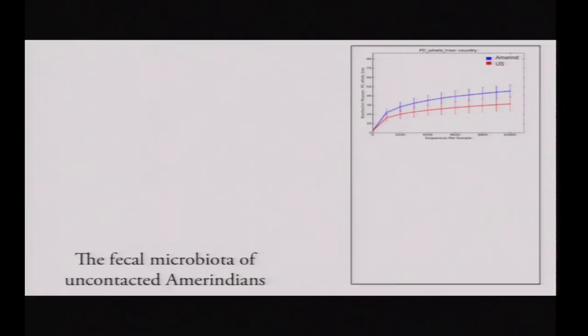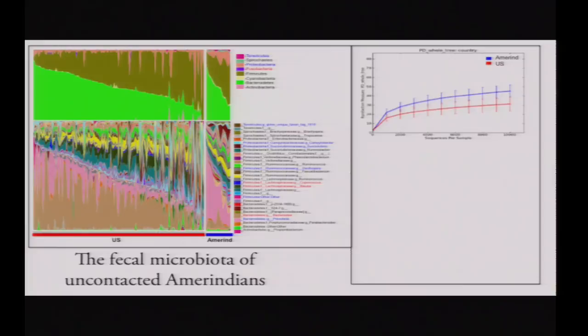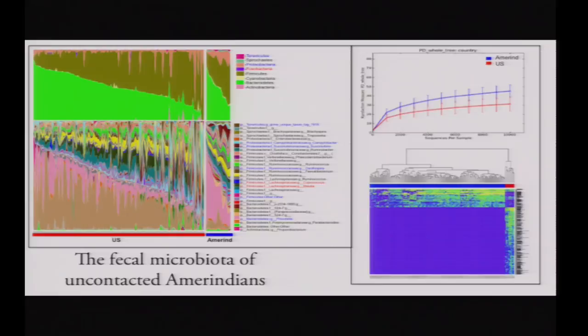Amerindian feces have much higher diversity than the U.S. At the phylum and genus level, they differ markedly: Amerindians show dominance of Prevotella, U.S. shows dominance of Bacteroides. Succinivibrio is high in these peoples and absent in the U.S.